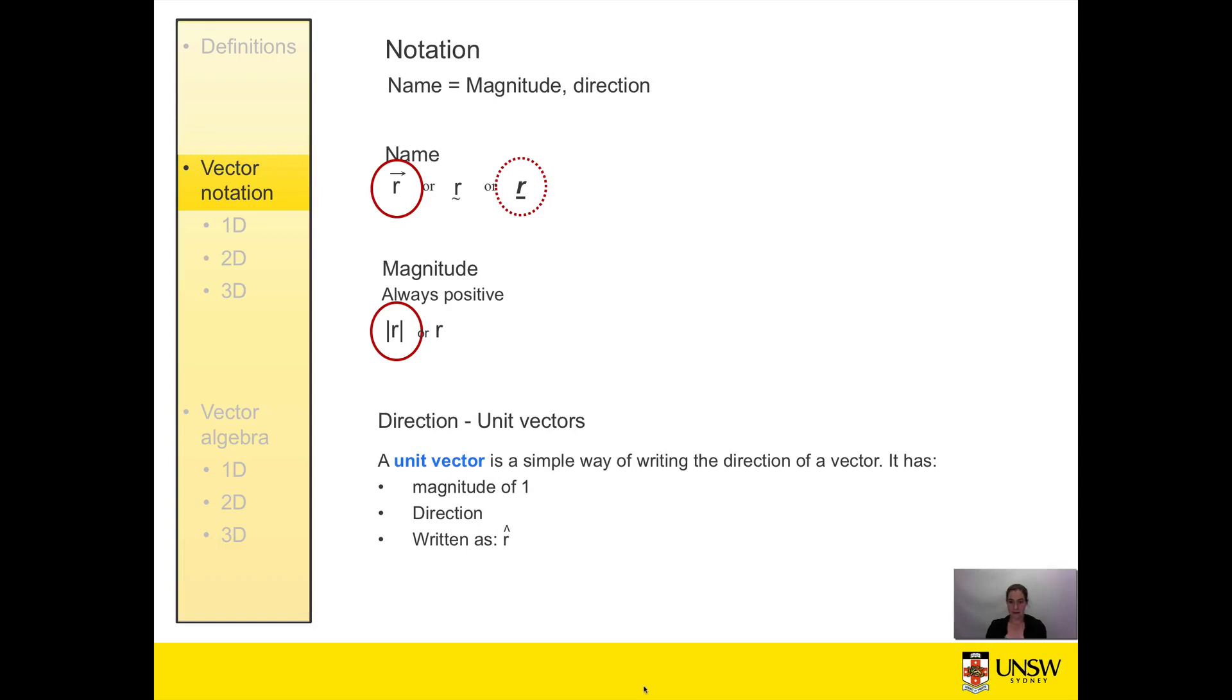The magnitude is not one centimeter or one millimeter, it's just one. And it's always written as the letter with a hat over the top of it to distinguish it from the vector name.